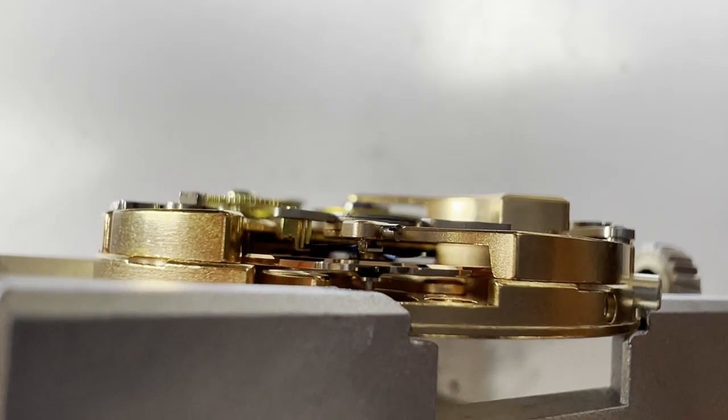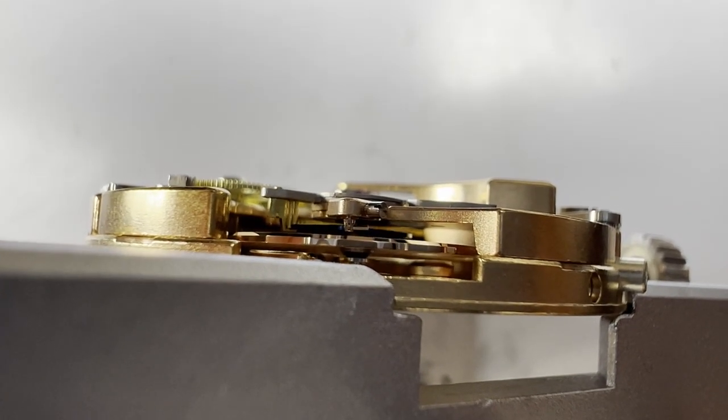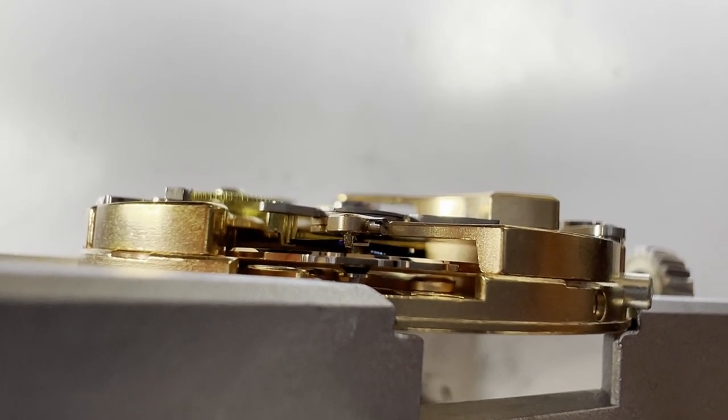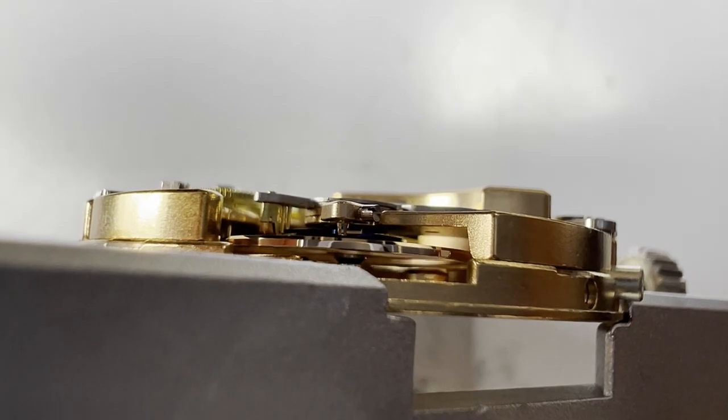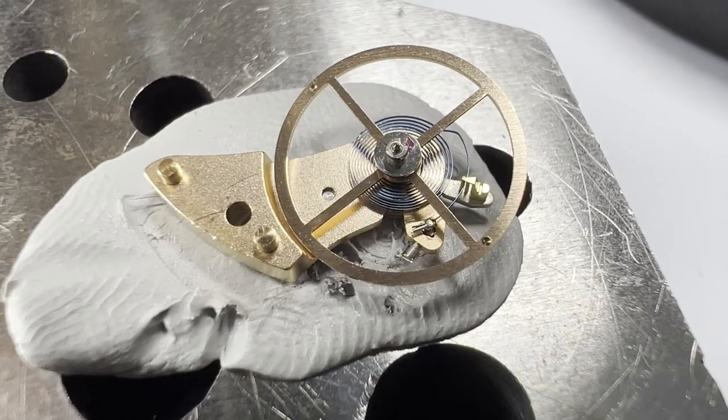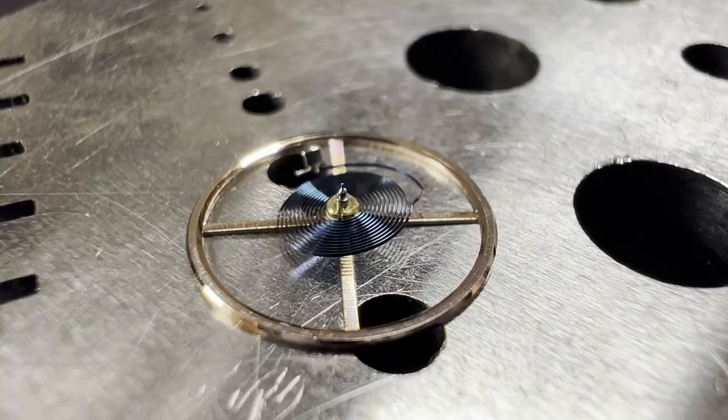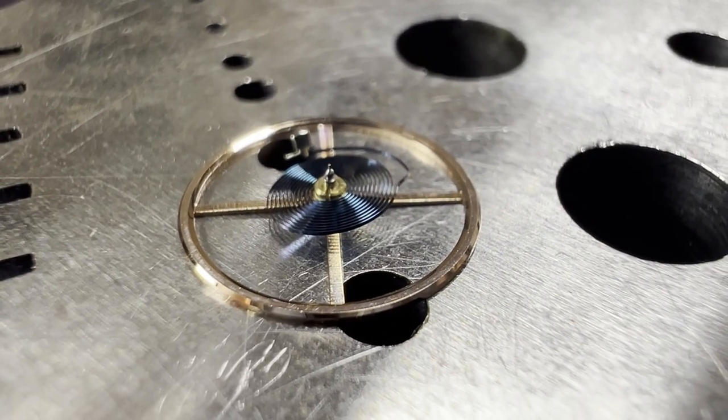During the usual inspections, it was noticed that the watch wasn't running great. Upon reassembly of the balance, it can be seen that the hairspring bobs up and down. This will need to be looked into for the watch to run accurately. To start this repair, we take off the balance assembly and remove the balance wheel. We can clearly see that the hairspring is askew.